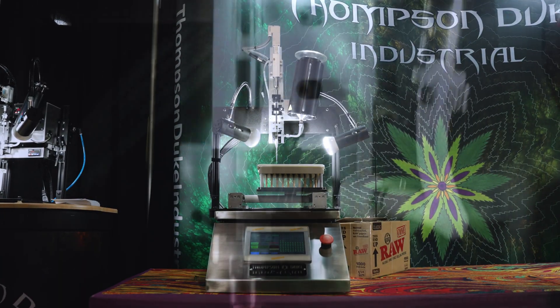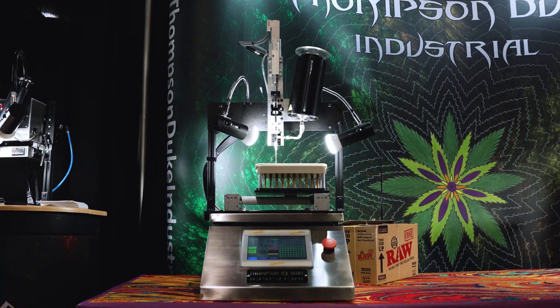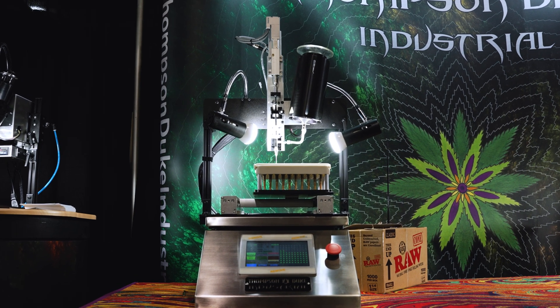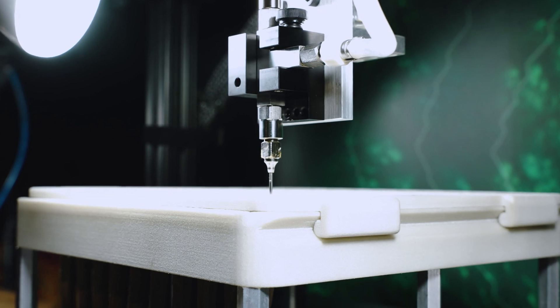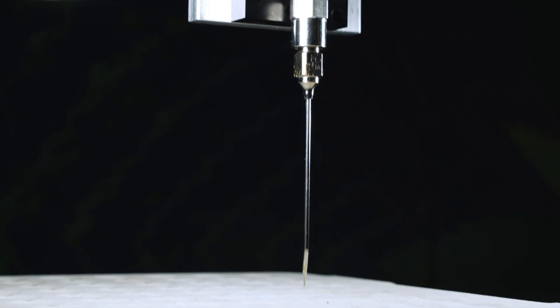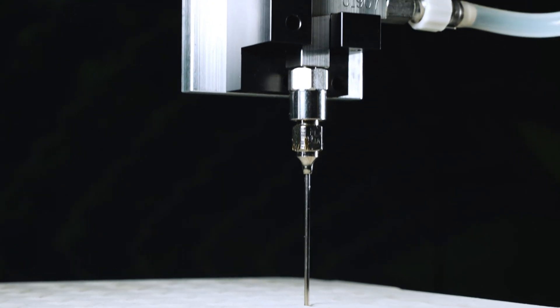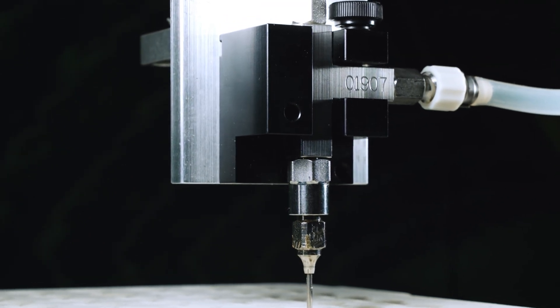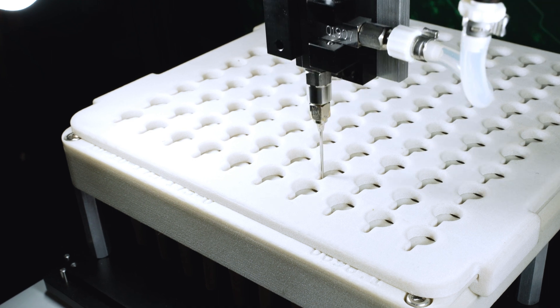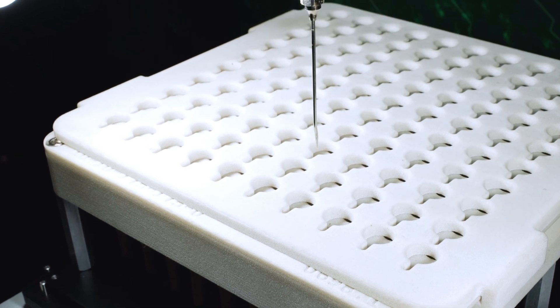This system was built on the same premise as our IZR filling machine. We then replaced the dispense assembly from pneumatics to a servo control. As you can see, as it's drawing out of the joint, it's dispensing at the same time, which is a bottom-up fill process. That allows the operator to decide where to start and stop the oil within the joint.